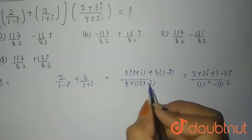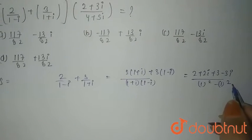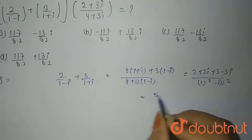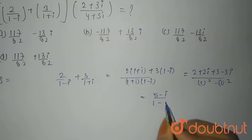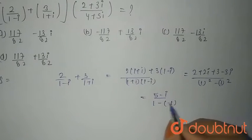Because identity of a plus b into a minus b is nothing but a square minus b square. Now you will have 5 minus iota divided by 1 minus minus 1 because the value of iota square is minus 1.